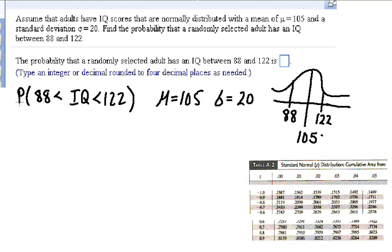So I'm looking for the probability that the IQ is greater than 88 and less than 122. My mean is 105, my standard deviation is 20. And if we look at that graphically, I want to know the area or the probability in here, in this given area.